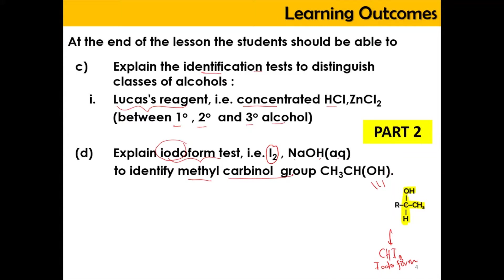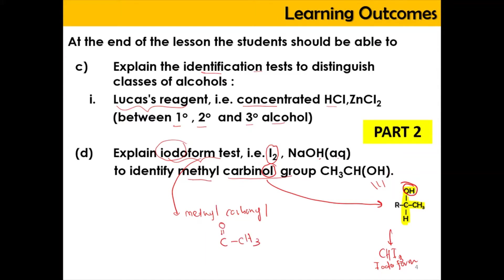The iodoform test can also be used to identify methyl carbonyl. This is known as the methyl carbonyl group, and in the latter chapter on carbonyl compounds, the iodoform test can also be used to identify methyl carbonyl, which has the structure C double bond O and CH3. But for now, let us focus on the methyl carbonyl first.